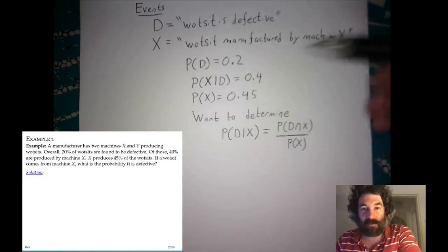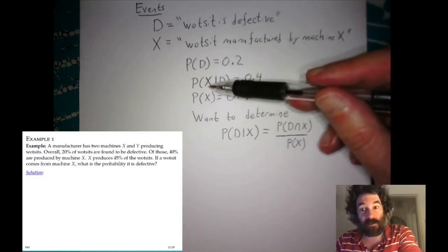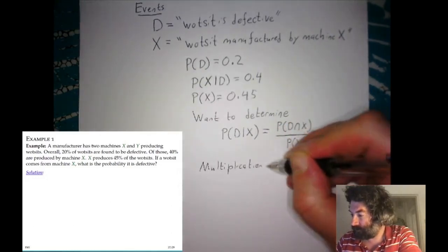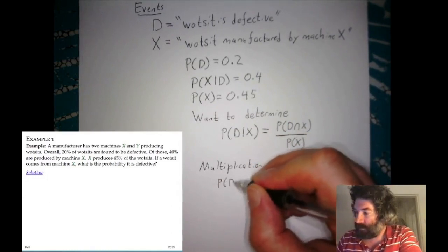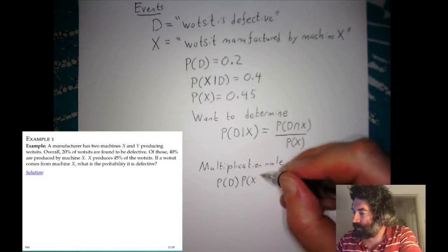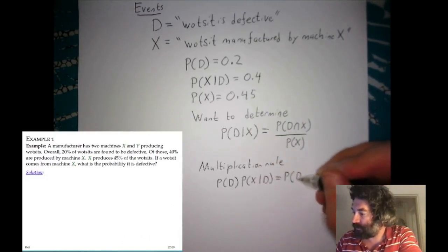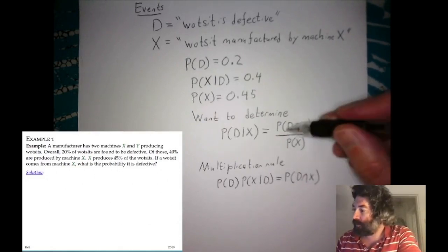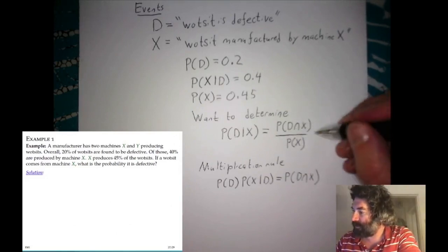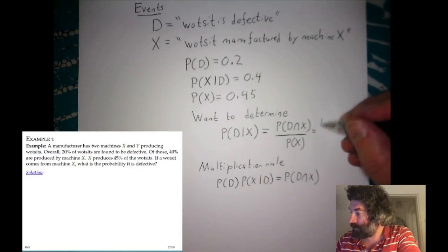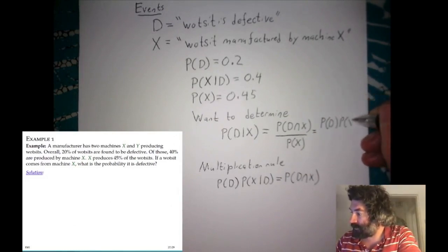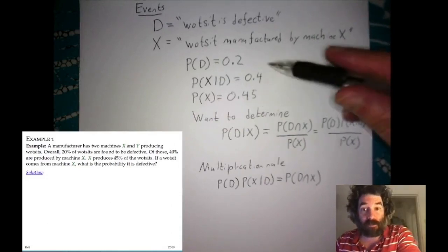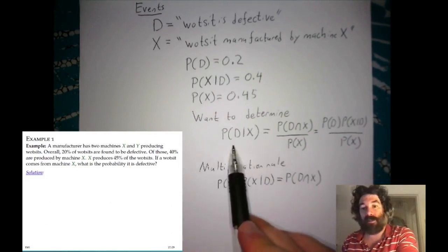We can use the multiplication rule for the conditional probability of X given D. The multiplication rule says that P(D) times P(X|D) equals P(D ∩ X). This was an immediate consequence of the definition of conditional probability. We then plug that into the previous equation for P(D|X), giving us P(D) times P(X|D) divided by P(X). These are the three quantities we have, so we can immediately calculate the answer.